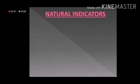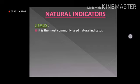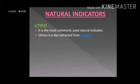Let us discuss the natural indicators in detail. The first important and most commonly used natural indicator is litmus. Litmus is actually a dye that is extracted from lichens. Lichens are the organisms which show symbiosis between fungi and algae — we studied about them in chapter 1, nutrition in plants. It is lichens which help us derive this dye and prepare this indicator.